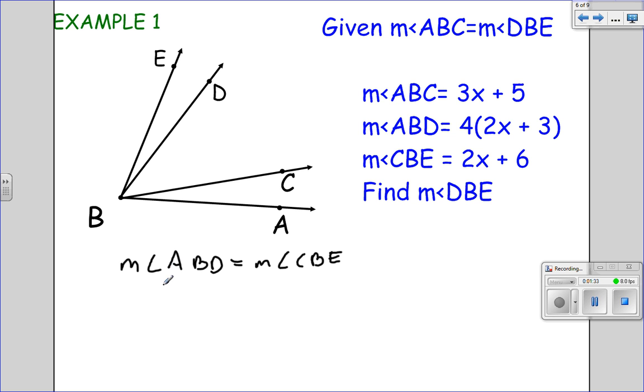And now I substitute it in and solve. So 4 times 2x plus 3 equals 2x plus 6. And if you're still confused on this step, try to highlight what you're given. You're given that this section right here, ABC, is equal to DBE.